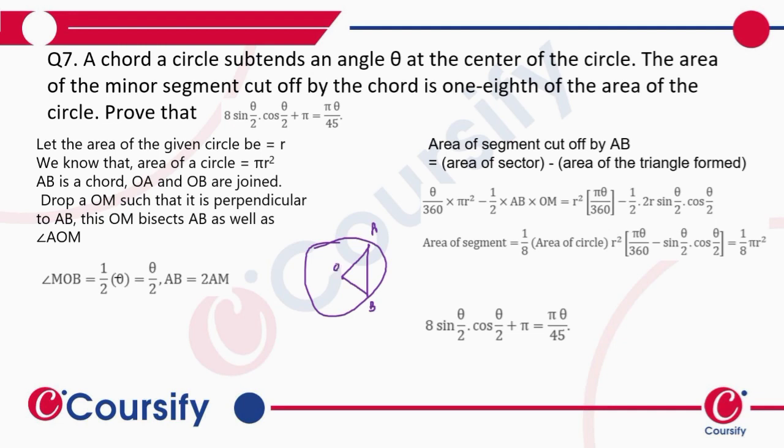We have to drop OM such that it is the perpendicular bisector of AB. So it is perpendicular bisector and as well as it bisects the angle AOB, so these two angles become equal.